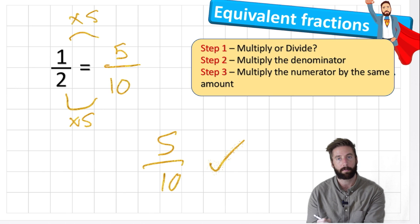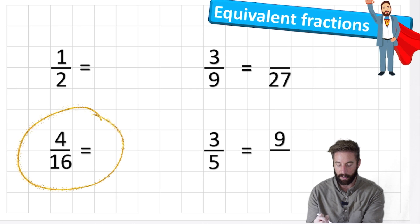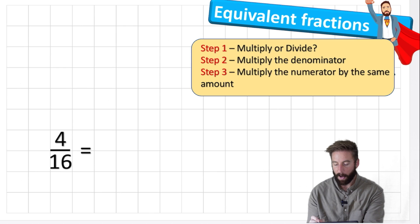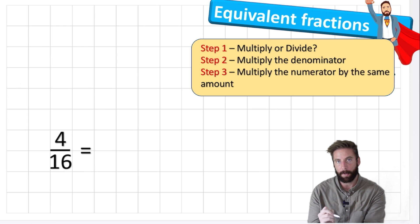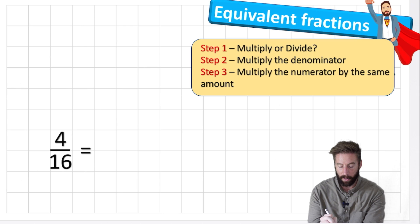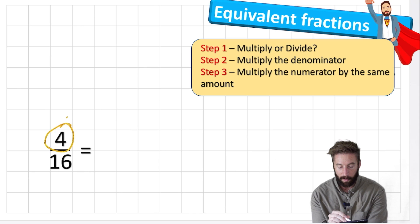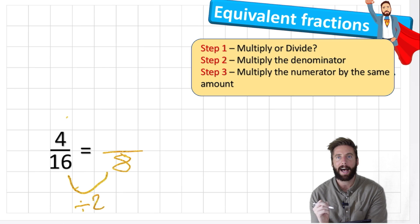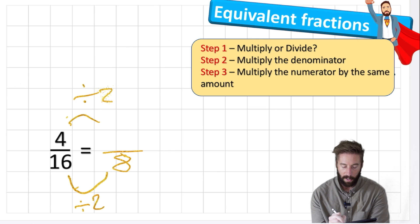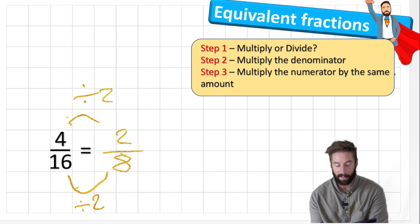Let's pick a harder one - four sixteenths. Same steps: I choose whether to multiply or divide, multiply the denominator, then multiply the numerator by the same amount. In this case I can divide because I can divide the number four. I'll divide by two: sixteen divided by two is eight. Whatever I do to the denominator I do to the numerator - four divided by two is two. So two eighths are the same as four sixteenths - same value. Like our chocolate bar: having four sixteenths is the same as having two eighths.